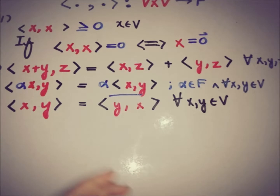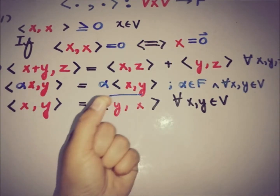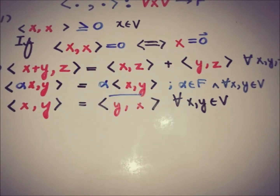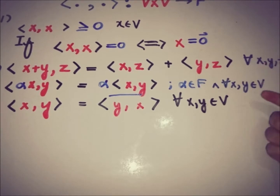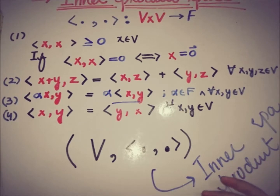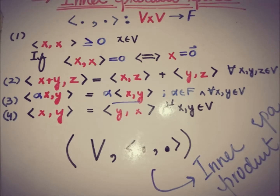So these are the four properties of the inner product space. An inner product is a function from V cross V to F that takes a pair from the vector space and gives a scalar from the field. If it satisfies the four properties, we form the pair of the vector space V and the function, and this pair is known as an inner product space. Subscribe to the channel for more upcoming videos. Take care, goodbye.